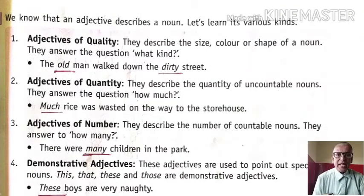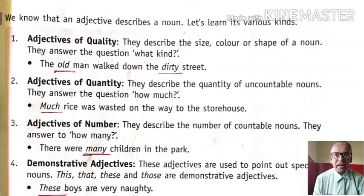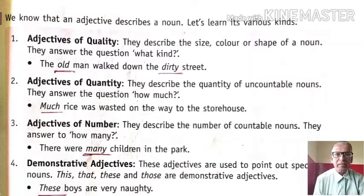Second, adjectives of quantity — they describe the quantity of uncountable nouns. So they answer the question how much. Example: much rice was wasted, so much is the adjective part here. Third, adjective of number — they describe the number of countable nouns. They answer how many. There were many children in the park, so many is the adjective part here.